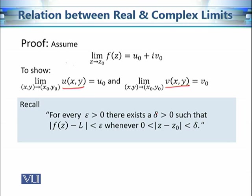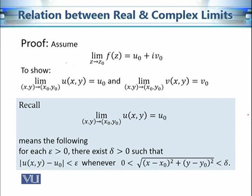Now, u(x,y) and v(x,y) are real valued functions of two variables. To prove this, we should use the definition described in our earlier discussions about the limits of real valued functions. If this limit equals u₀, it means for every epsilon greater than 0, there should exist a delta such that the distance between the functional values and u₀ is less than epsilon, whenever the distance between (x,y) and (x₀,y₀) is less than delta.